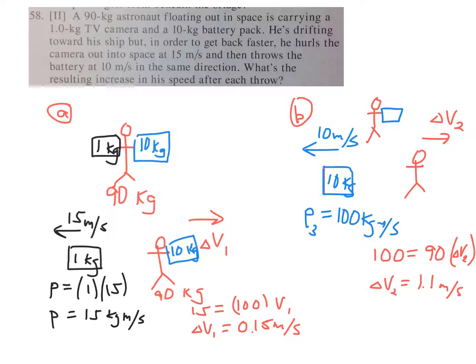That's the gain in speed for the second part, so the total gain in speed will be 1.25 meters per second.